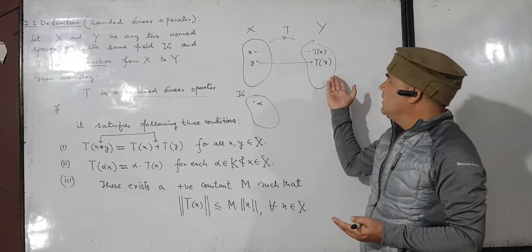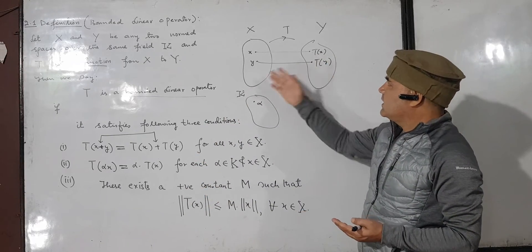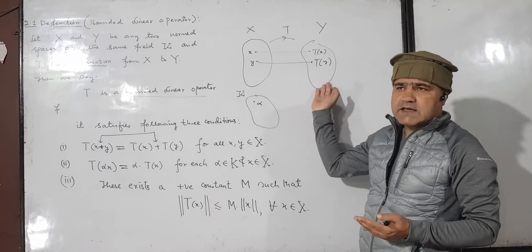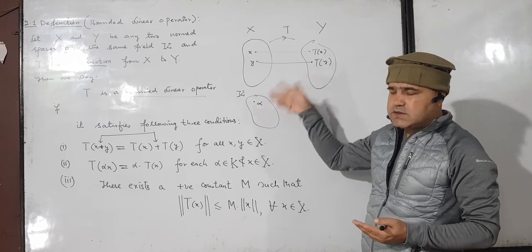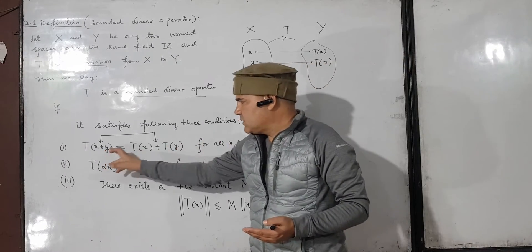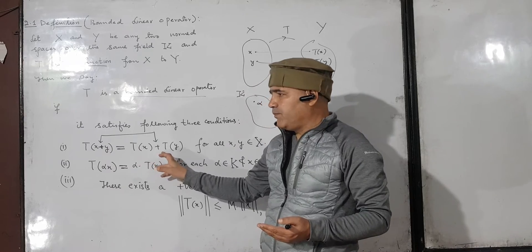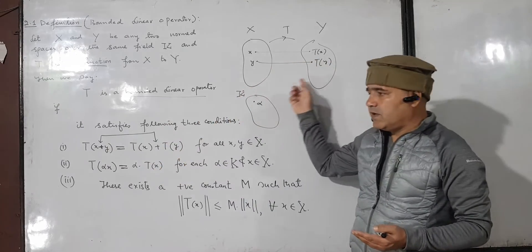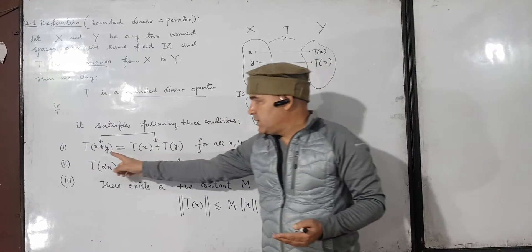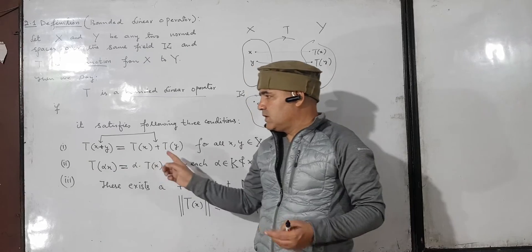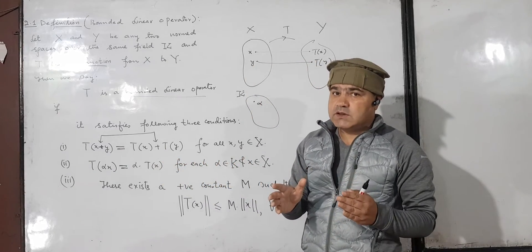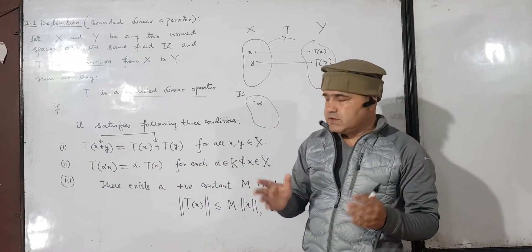They may be the same in some cases — for example, if Y and X are the same norm space, then both plus operations can be the same. But in general, since X and Y could be different, these two plus signs could be different operations, although they look similar.